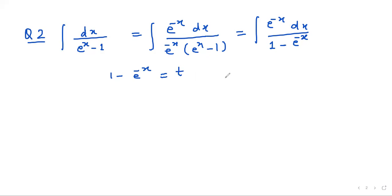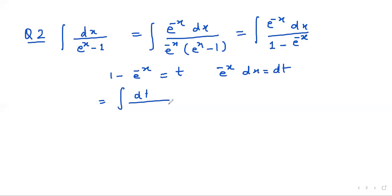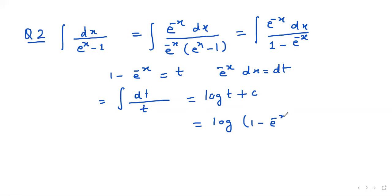We differentiate it and get e power minus x dx equals dt. So the question becomes the integration of dt upon t, which equals log t plus c, where t equals 1 minus e power minus x. So the answer is log of 1 minus e power minus x plus c.